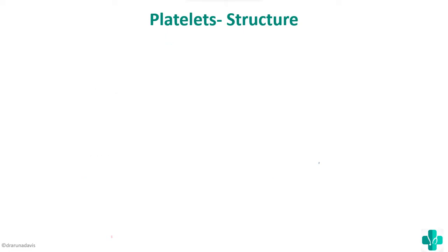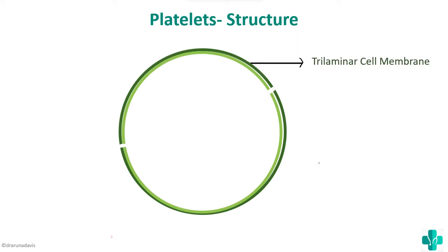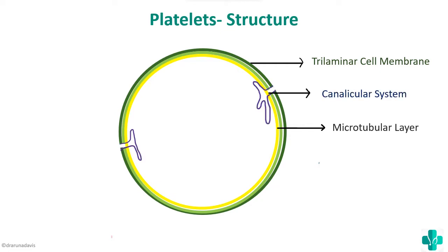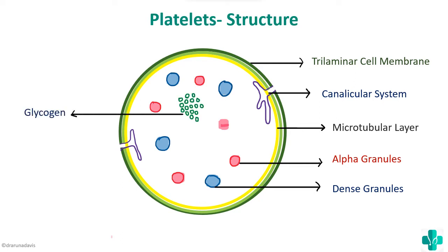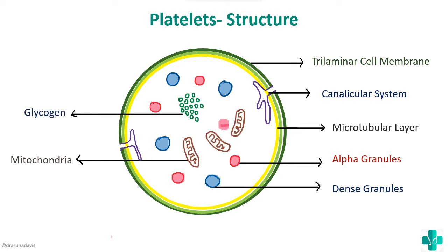Platelets have a cell membrane which is trilaminar. Just beneath the cell membrane there is a microtubular layer, which is responsible for its disc shape in the resting state. It has a canalicular system which acts like a reserve membrane. The cytoplasm contains alpha granules and dense granules. It also contains glycogen and mitochondria to provide energy. Dense tubules are loaded with calcium and help the platelet in contraction.